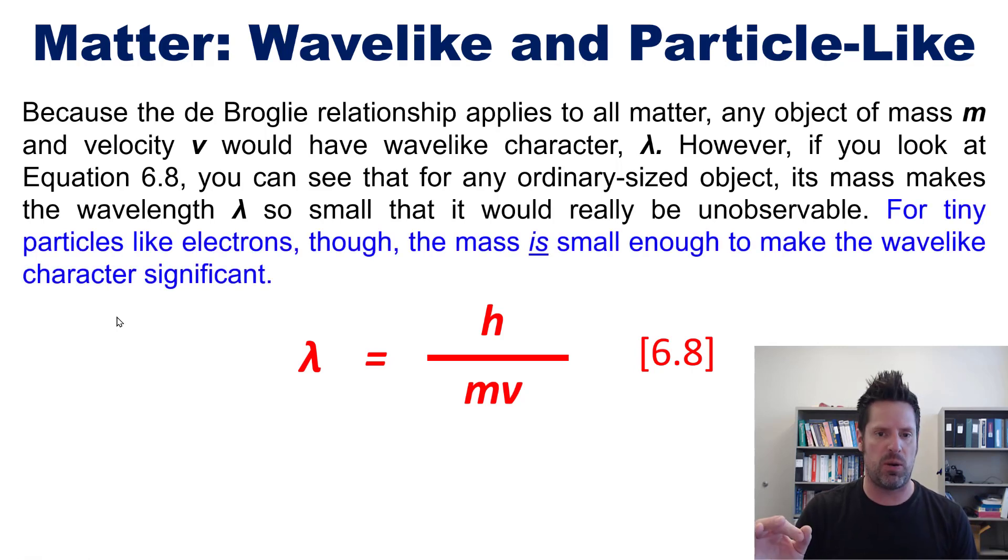For small particles like electrons however, their masses are small enough that the overall wavelength number, even when dividing out Planck's constant, ends up being large enough to make the wave-like character significant.